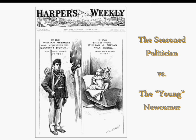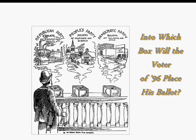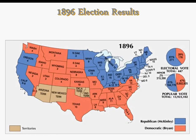The Prohibition Party is going to run a candidate, and the 18th Amendment later in the 20th century will outlaw the sale and manufacture of alcoholic beverages. Into which box will the voters place his ballot — the People's Party, the Democratic Party, or the Republican Party? Essentially, the People's Party chooses William Jennings Bryan and they come to an end. The election results show that McKinley wins in the industrial areas of the United States, while Bryan carries the farm states and the South.